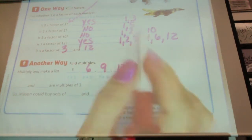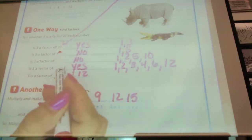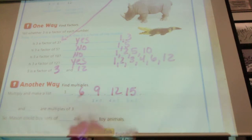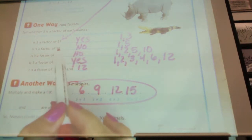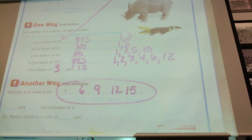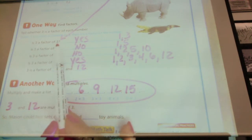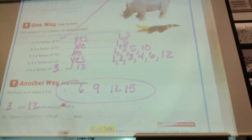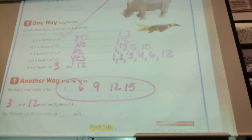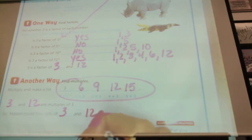Which of the numbers that were given up here do you find in our factors here? Three and twelve. So this is just another way of doing it. Instead of individually finding out if three is a factor of these numbers individually, you can just find all the factors of three for a while. Obviously, that's not all the numbers that three factors into. It goes infinite forever. So Mason can buy sets of three or twelve.